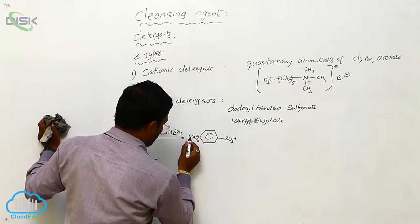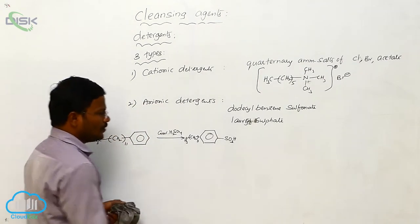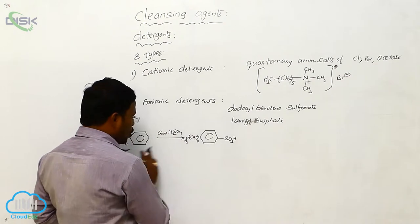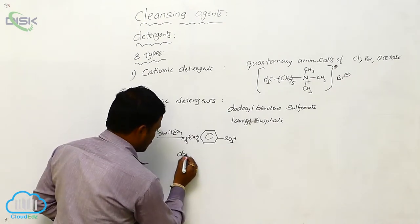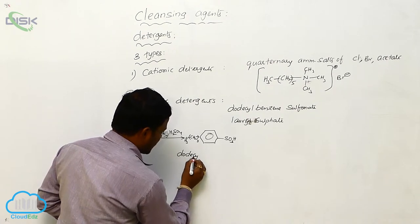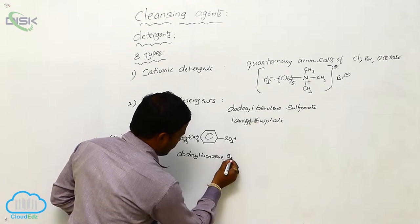And it is connected to CH3. Now, it is dodecylbenzene sulfonic acid. Dodecylbenzene sulfonic acid.